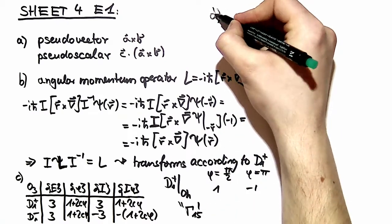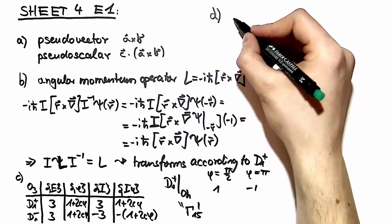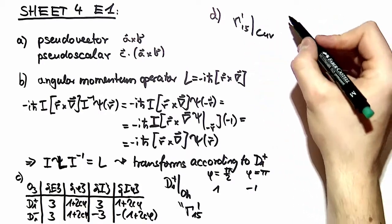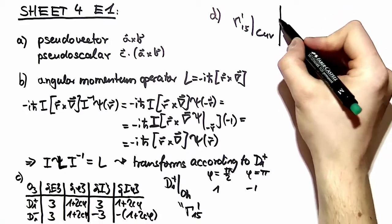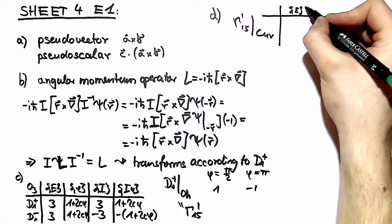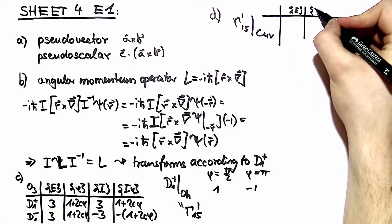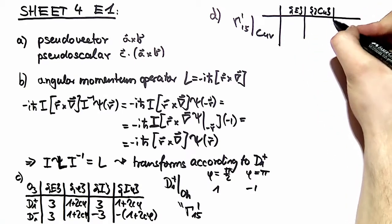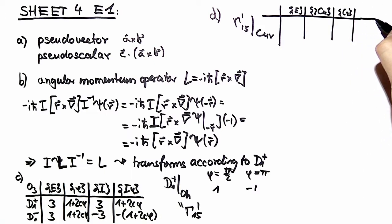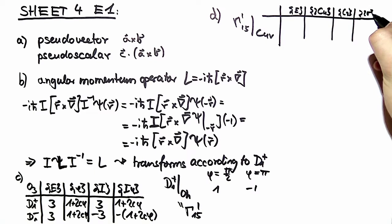In part d, we want to restrict gamma 1 5 prime even further. We want to restrict it to C4v, to the operations of C4v. We have the identity, we have the rotations among a fourfold rotation, we have the rotations with pi, and we have the two times two reflections.